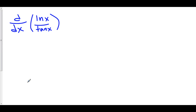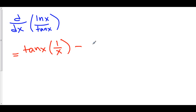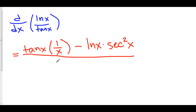Here we have the derivative of the natural log of x over tangent x. So we have low d high. Low is tangent x. D high is the derivative of natural log of x, which is just 1 over x. Minus high, which is the natural log of x. D low, the derivative of tangent of x, is secant squared of x. And that's all over low squared below — that's tan squared x. And here is our derivative.